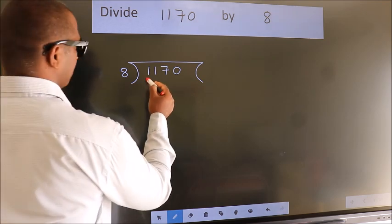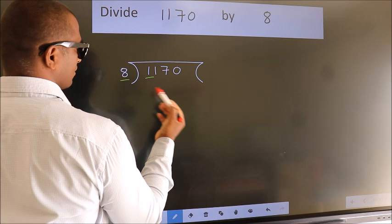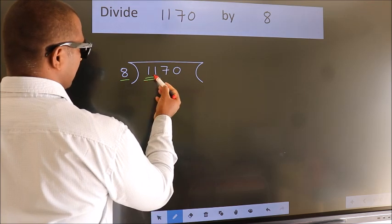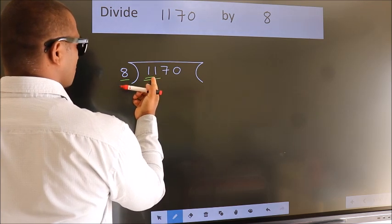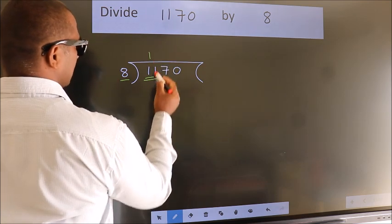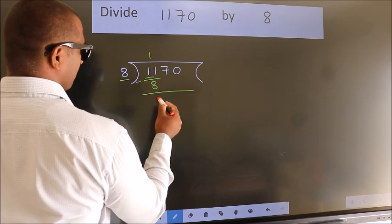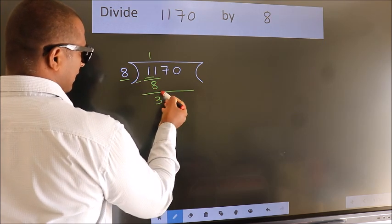Here we have 1. Here 8. 1 smaller than 8. So we should take 2 numbers. 11. A number close to 11 in the 8 table is 8 once 8. Now we should subtract. We get 3. After this,